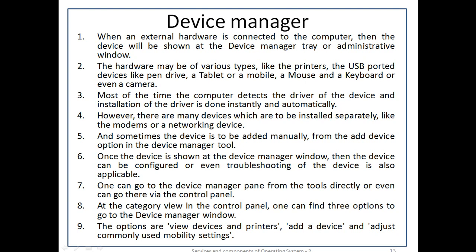When an external hardware device is connected to the computer, it will be shown in the device manager tray or administrative window. Hardware may be of various types like a printer, USB devices like a pen drive, tablet, mouse, keyboard, or camera. Most of the time the computer detects and installs drivers automatically. However, some devices such as modems or network devices must be installed separately and sometimes added manually from the add device option in the device manager tool. Once shown in device manager, the device can be configured and troubleshot.